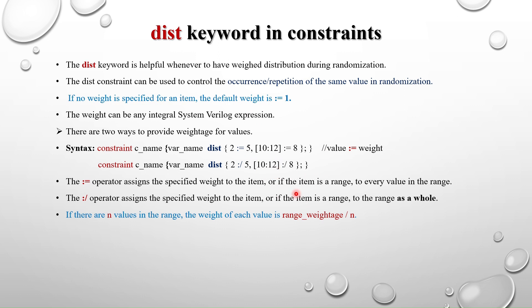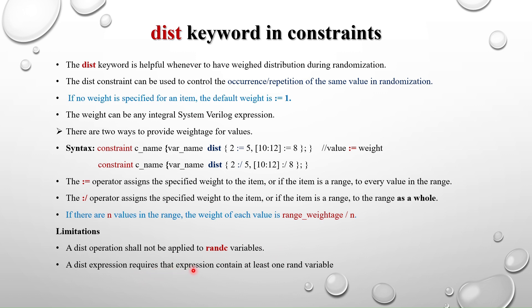The limitations of the dist constraint are: first, a dist operation shall not be applied to randc variables — it can only be used with rand variables. Second, a dist expression requires that the expression contain at least one rand variable. I will demonstrate these errors in the example.